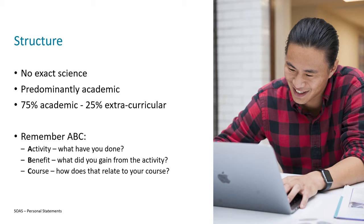When structuring the points you're making, you might want to bear in mind the ABC rule. This allows you to write concisely and not waste any characters. You start with an Activity, then think about what you've gained — the Benefit — and then link it back to your Course. For example, if your activity is part-time work and the benefit is developing problem-solving skills, you'd link that back by explaining how being a good problem solver will help you think outside the box when facing challenges during your degree.